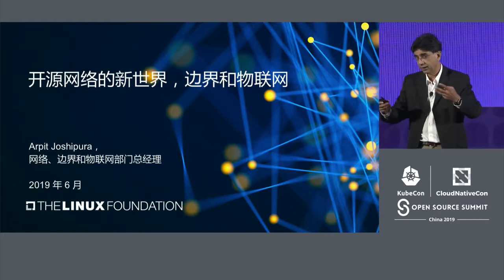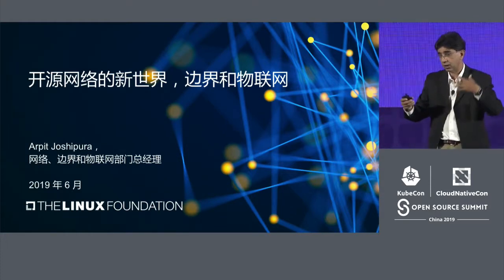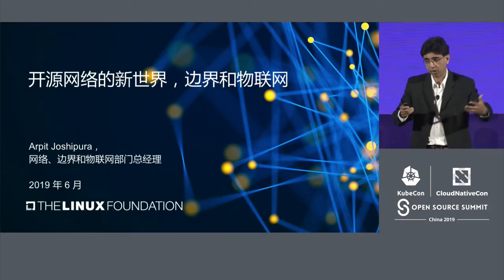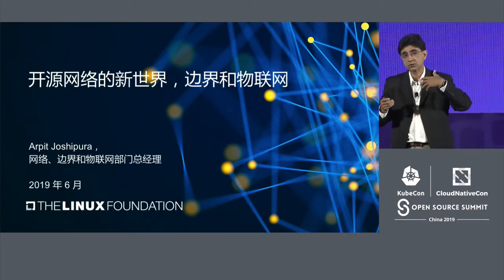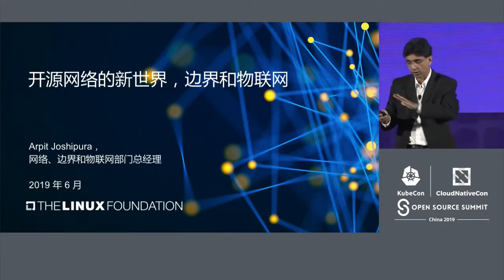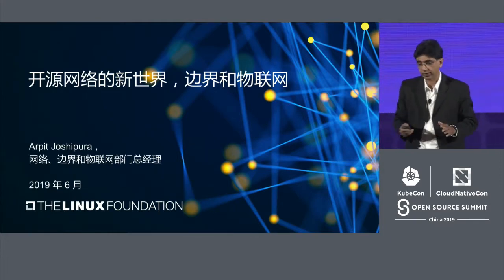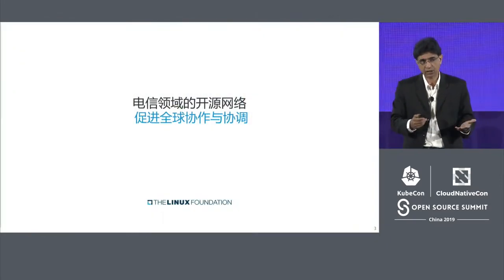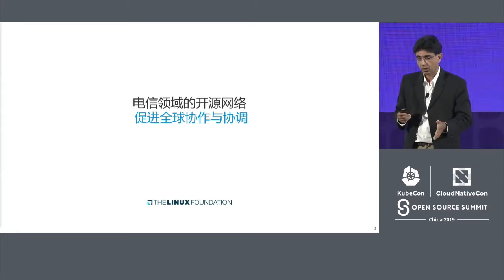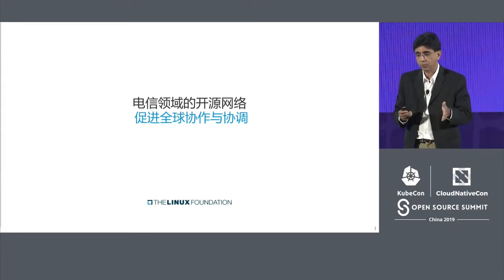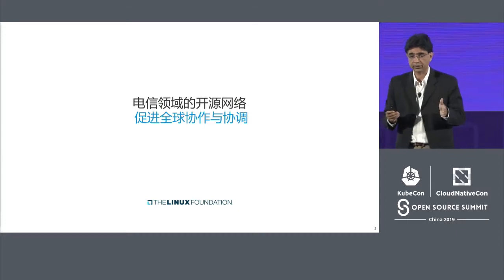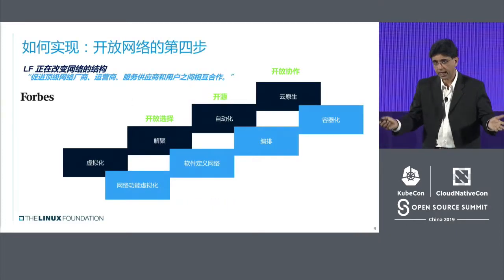Number three, there are interdependencies between projects across cloud native and other technologies. So I'm going to cover all three. Let me start off with the telecom networking part. Open source is going to be the de facto way how global networks are built.